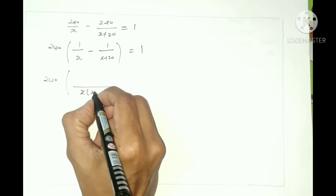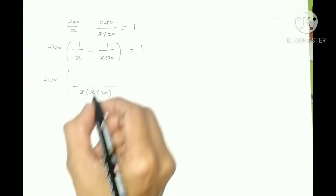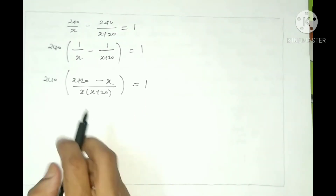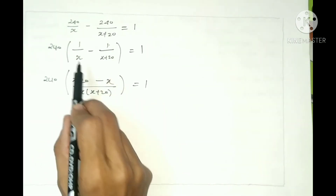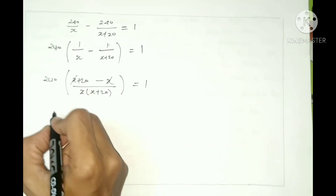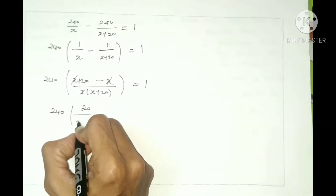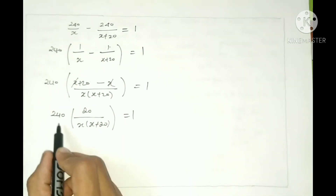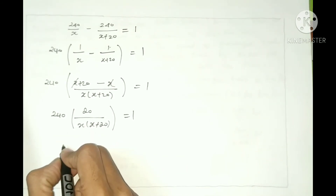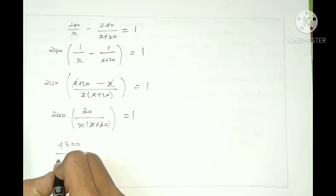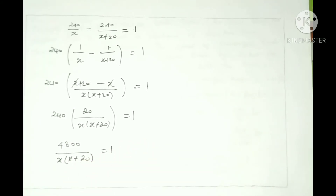After cross multiplication, x plus 20 minus x equals 1 multiplied by x into x plus 20. The x and minus x cancel, leaving 240 times 20 divided by x into x plus 20 equals 1. So 240 multiplied by 20 gives 4800, divided by x into x plus 20, equals 1.